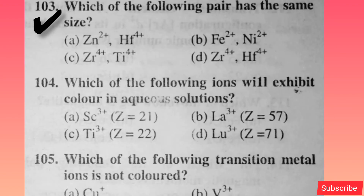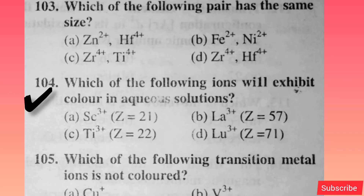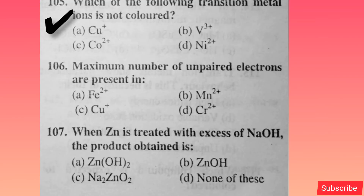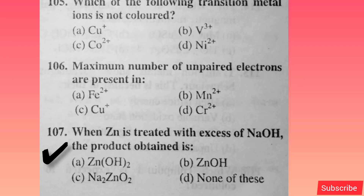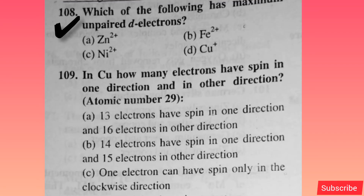Which of the following pairs has the same size? Option D is correct. Which of the following ion will exhibit color in aqueous solution? Option C is correct. Which of the following transition metals is not colored? Option A is correct. Maximum number of unpaired electrons are present in — option B is correct. When Zn is treated with excess of NaOH, the product obtained is — option C is correct. Which of the following has maximum unpaired d electrons? Option B is correct.